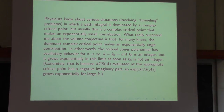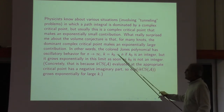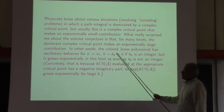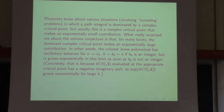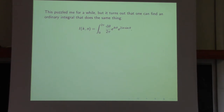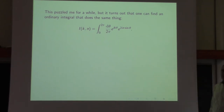I wanted to understand why that happened, especially since I knew it doesn't happen if k0 is an integer. Why does that happen as soon as k is not an integer? Eventually I learned that the same thing can happen in an ordinary one-dimensional integral such as an integral representation of Bessel's equation. We're integrating over the unit circle, and the integral depends on two variables k and n, playing a role similar to the parameters k and n in discussing the colored Jones polynomial.